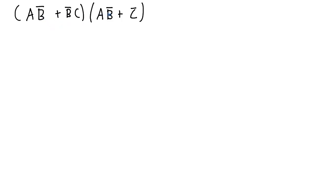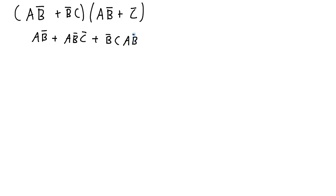So the first terms: a·NOT b ANDed with a·NOT b gives me a·NOT b — I can just write it out one time, because anything ANDed with itself will just be itself. Then the outside terms: a·NOT b ANDed with NOT c. Then the inside terms: OR with NOT b·c, a·NOT b. And then the last terms: OR with NOT b·c, NOT c. Anything ANDed with the inverse of itself is going to become 0, so that whole term is going to be 0 and I can just drop it.